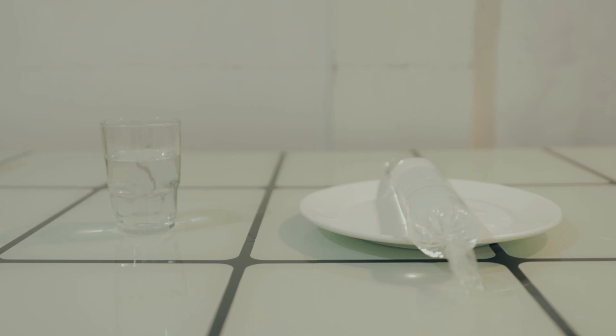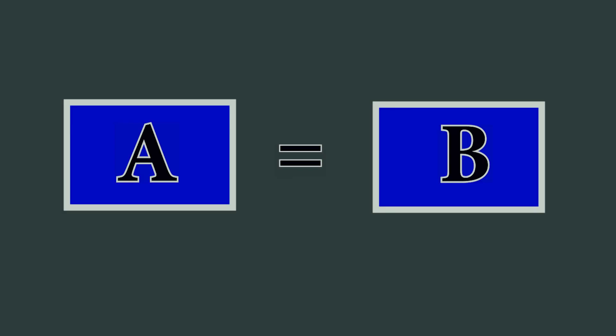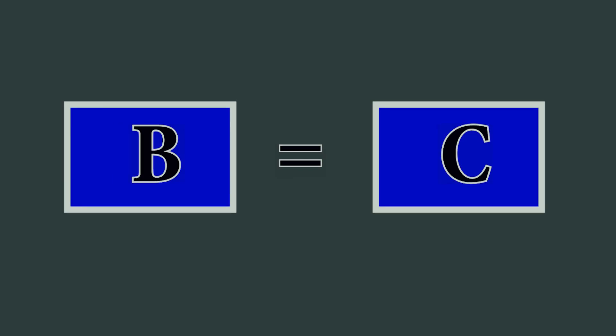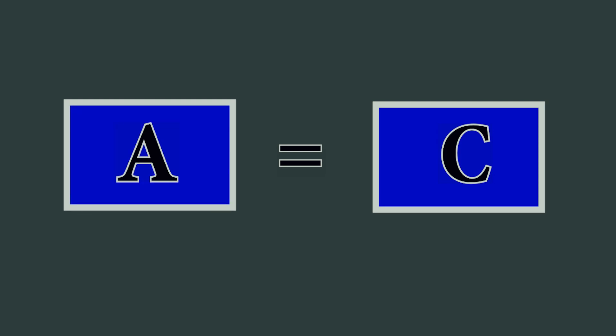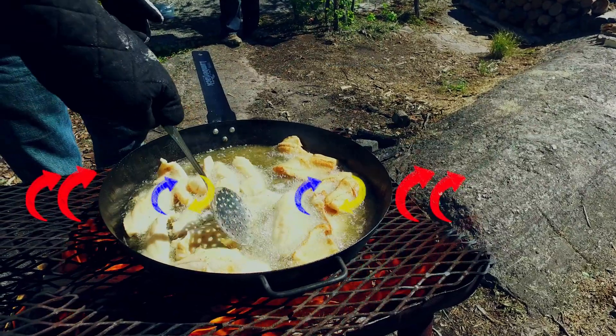Following the zeroth law of thermodynamics, objects with the same temperature are considered to be in thermal equilibrium. Thus, the ice on the right which turned liquid has now an equal temperature with the water on the left. The zeroth law of thermodynamics states that if system A and B are initially at thermal equilibrium and B is found to be in thermal equilibrium with C, then A and C are also in thermal equilibrium.